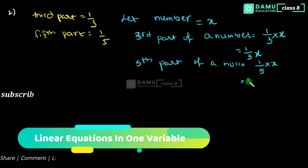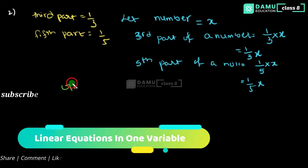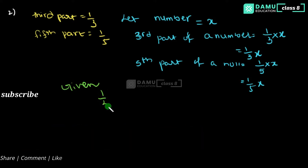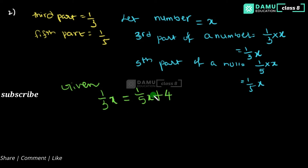So what they are given is: the third part of the number exceeds the fifth part. Exceeds means this value is greater. So 1/3 x is greater than 1/5 x, and if you add 4 to 1/5 x you'll get the third part. So we need to add 4 to this.